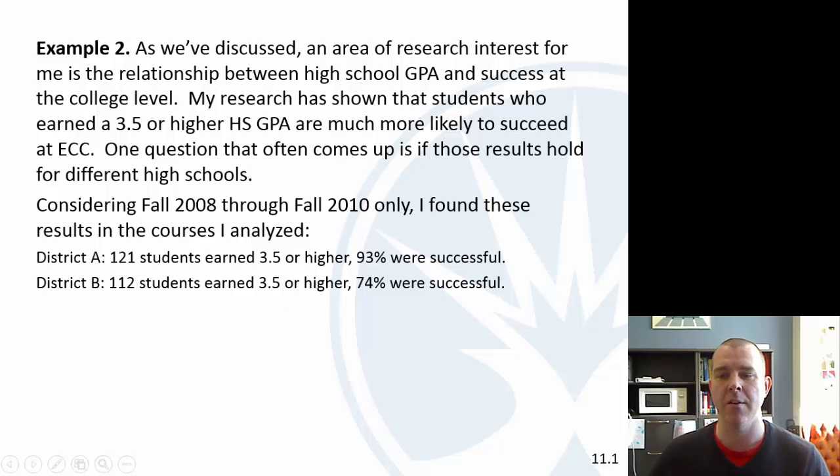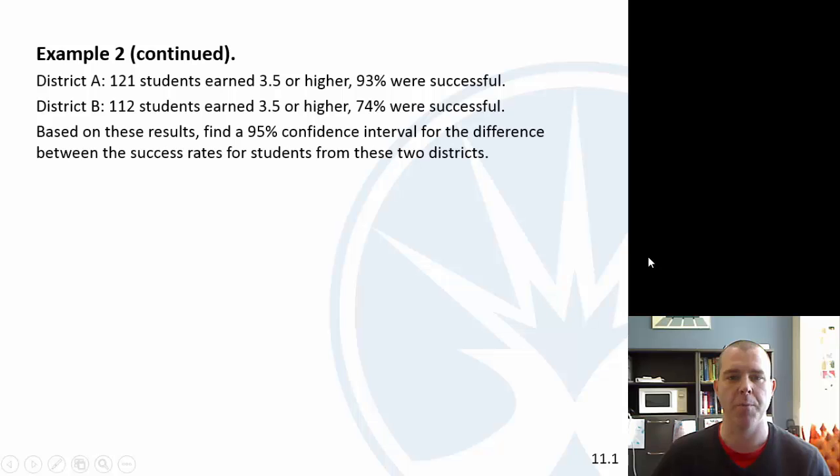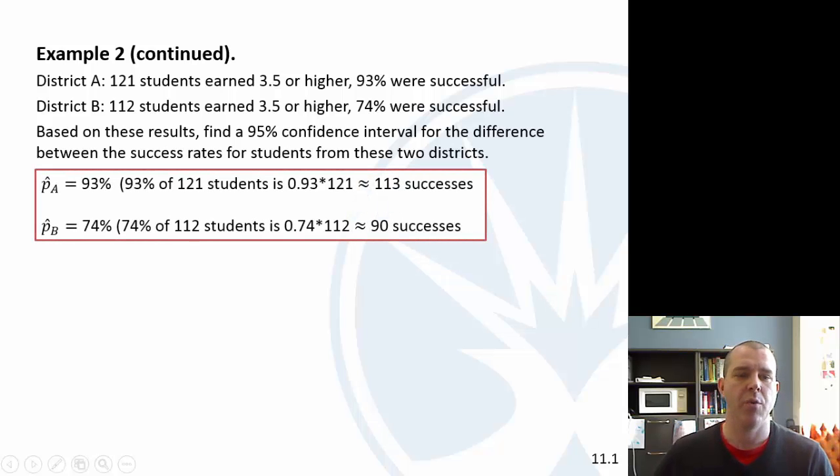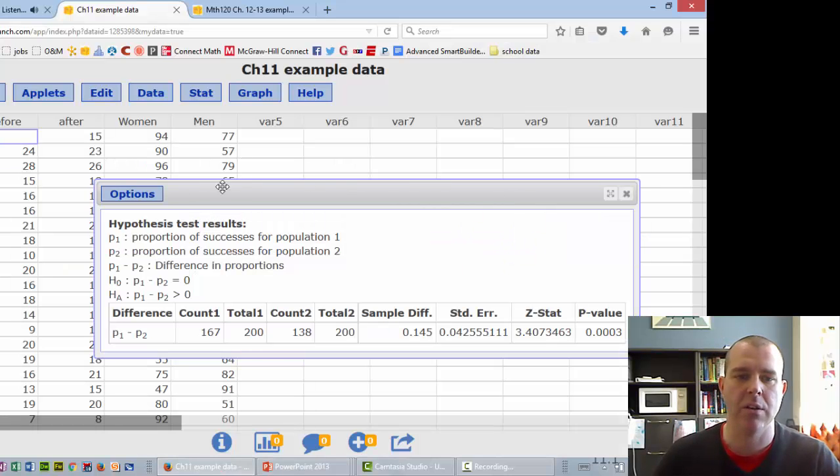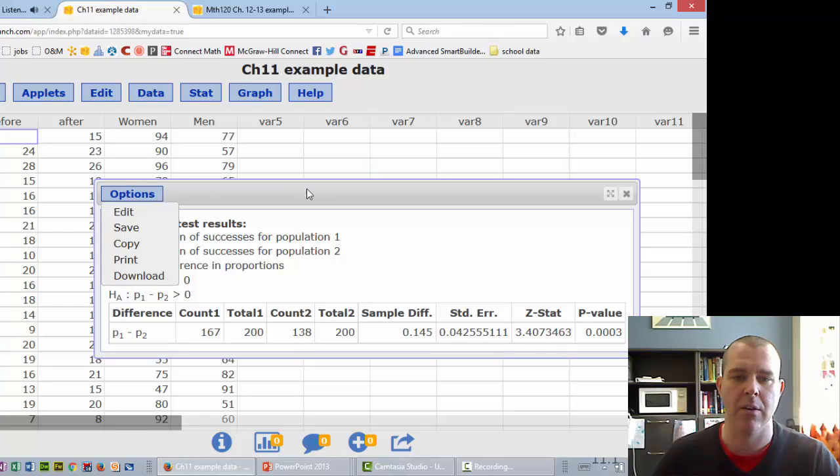Here's a summary of what we have. If we look at the sample proportion for district A, 93%, so about 113 successes. And then district B, we'd have about 90 successes. So let's go to StatCrunch again.